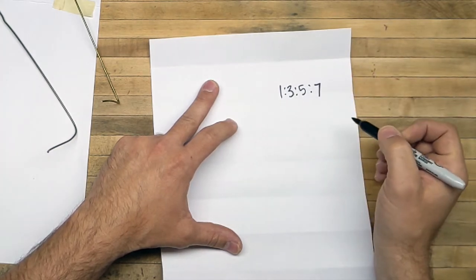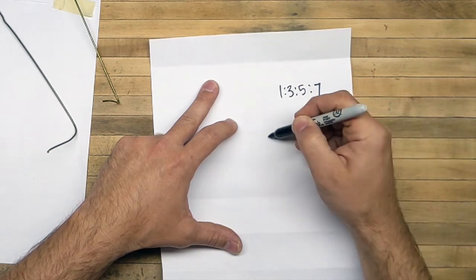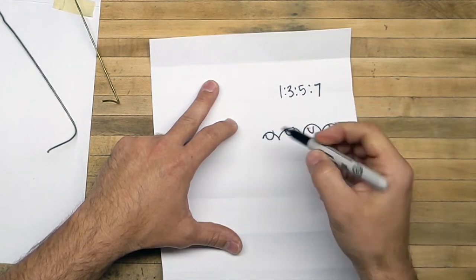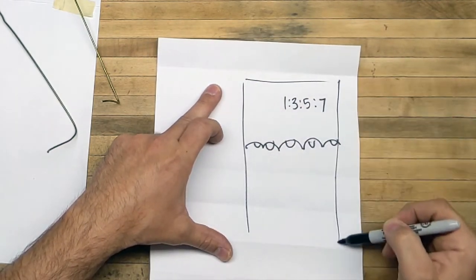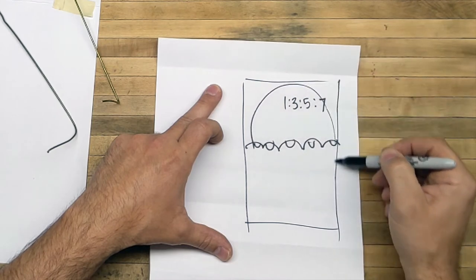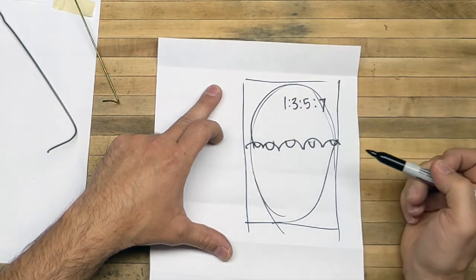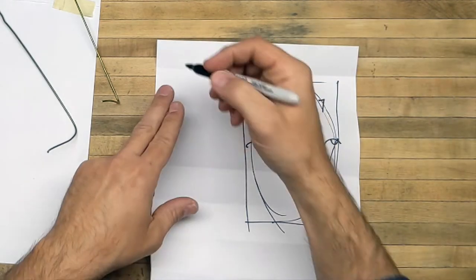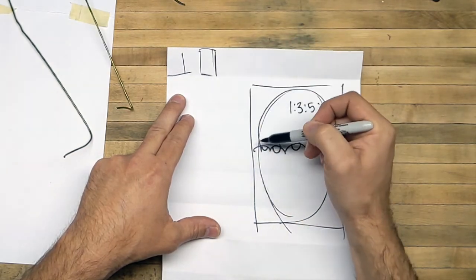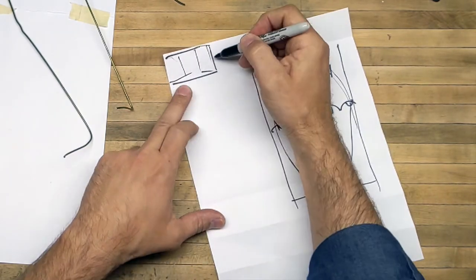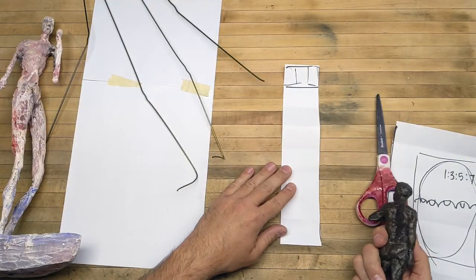A realistic figure might be somewhere between six and eight heads tall. From doing heads you might remember that our heads are based on one, three, five, seven, and each of those ones is an eye. Our heads are five eyes wide - one, two, three, four, five - and seven eyes tall, which is about that tall. Our eyes kind of fit in a five by seven box.